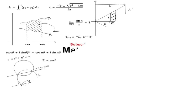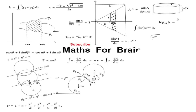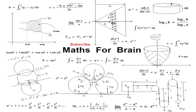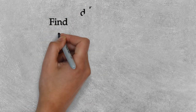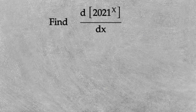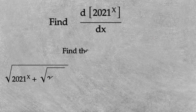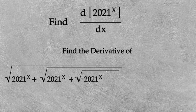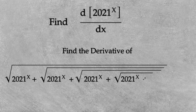Always use your brain — this is maths for the brain. First, find the derivative of 2021 raised to the x power. Then find the derivative of the square root of 2021 to the x power, plus another inside square root of 2021 to the x power, plus another inside square root of 2021 to the x power — this repeats infinitely.